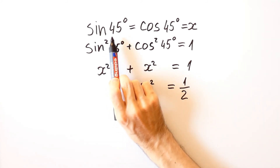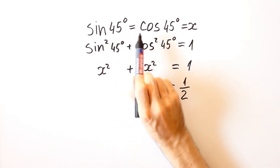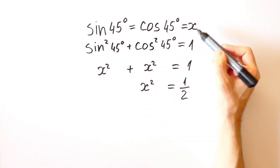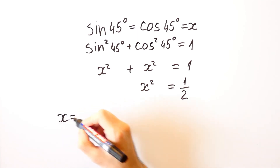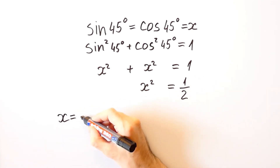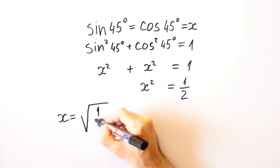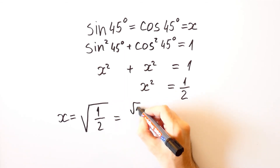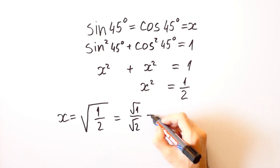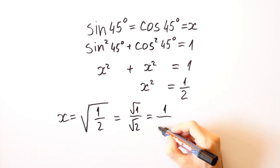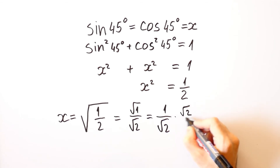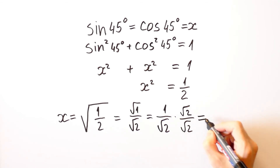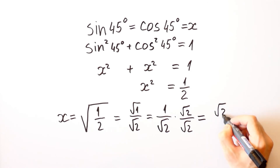Since 45 degrees is an acute angle, the sine and cosine of 45 degrees are positive, which means that x is positive. So we can say that x is equal to the square root of 1 over 2, which equals the square root of 1 over the square root of 2, that is, 1 over the square root of 2. If we don't want to leave the square root in the denominator, we can multiply by the square root of 2 over the square root of 2.